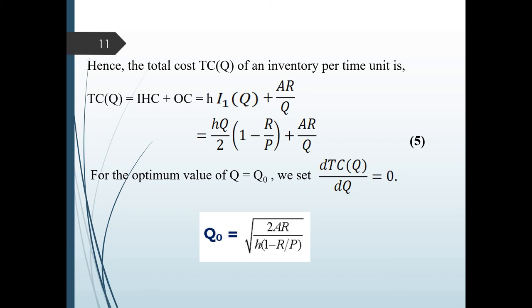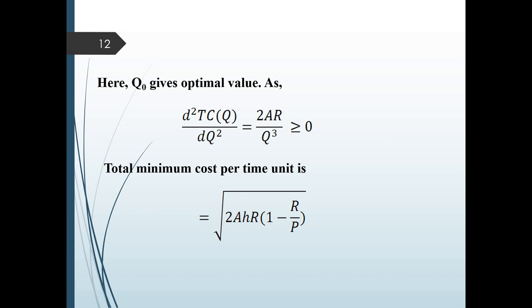The total cost function is well-defined and continuous, so using classical optimization, the optimum value Q0 is obtained by setting the first-order derivative of total cost with respect to Q equal to zero. This simplifies to Q0 equals the square root of 2AR divided by H times (1 minus R/P). The second-order derivative of total cost with respect to Q is 2AR/Q³, and since all parameters are non-negative, the second-order condition confirms that the total cost at Q0 is a minimum. Substituting Q0, the total minimum cost per time unit is the square root of 2AR times H times (1 minus R/P).